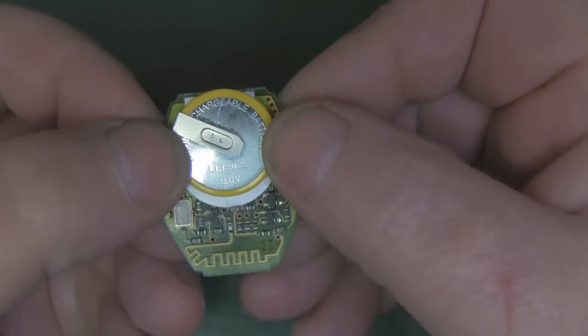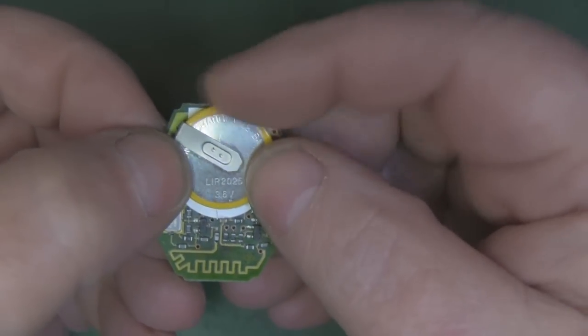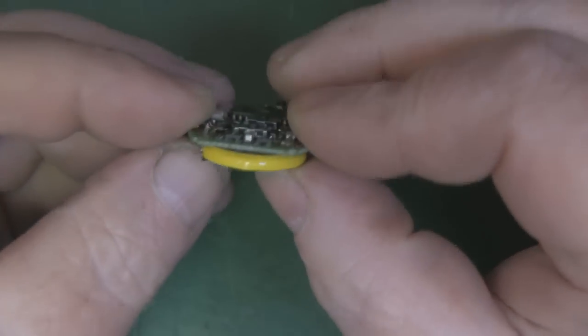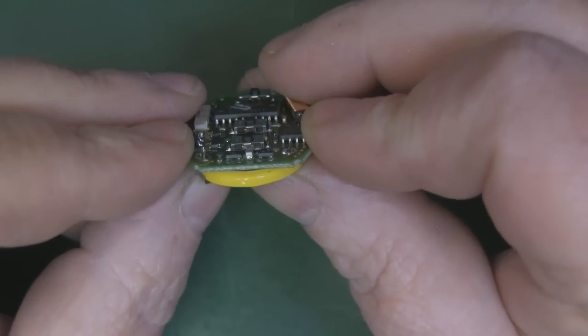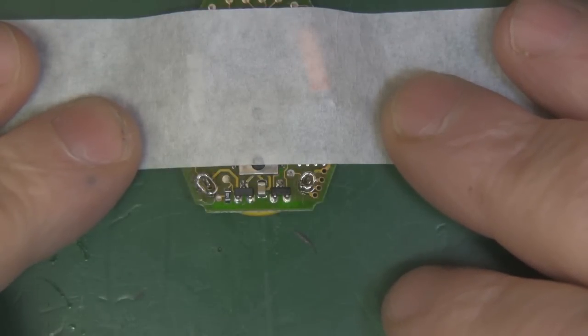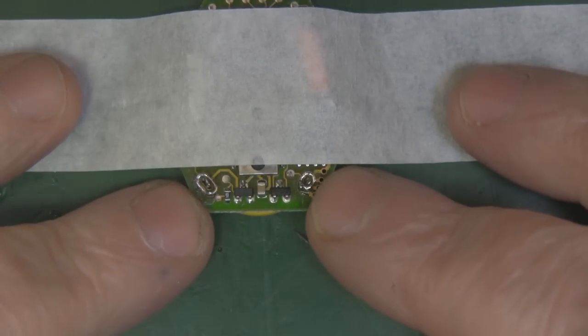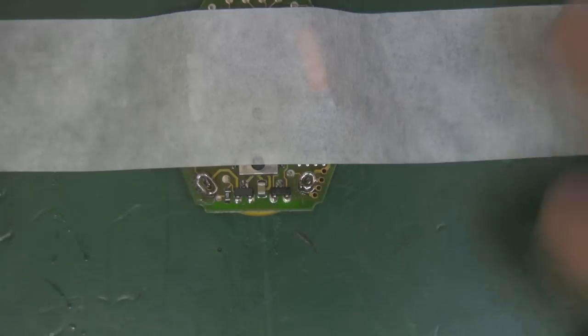We've got the new battery's terminals through and it doesn't quite lay in the same position as the original one but I don't think it's going to cause too much of a problem. Now I'm going to solder those two terminals in place. I've got the key fob held down on my bench with some masking tape here just to make it stable when I come in with a soldering iron.